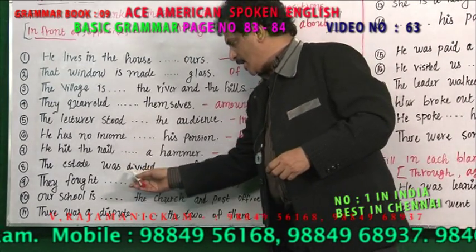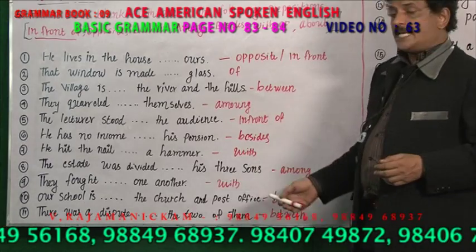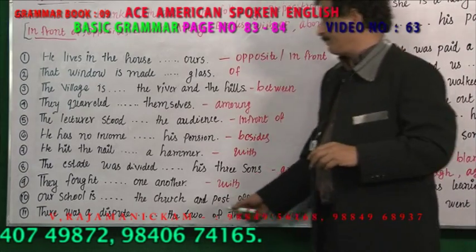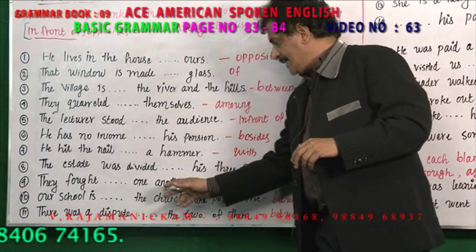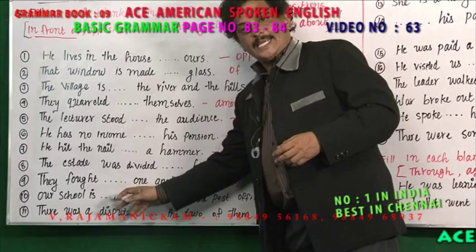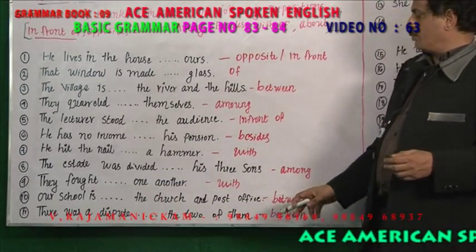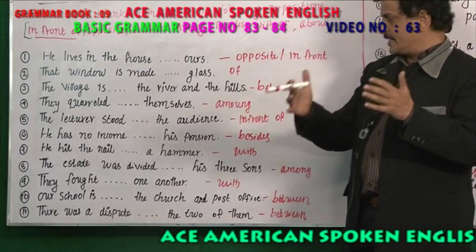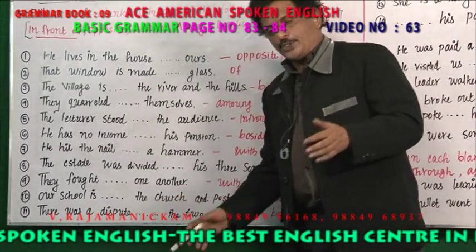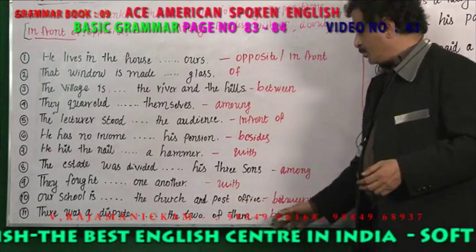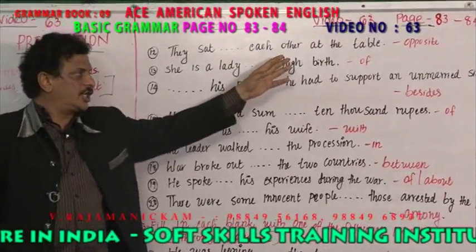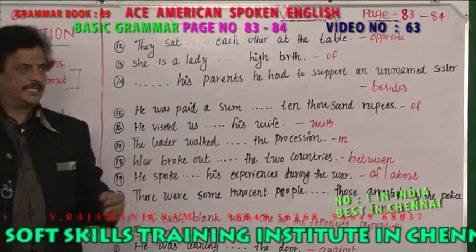'The estate was divided dash his three sons' — among three sons. 'They fought dash one another' — with one another. 'Our school is dash the church and post office' — our school is between the church and post office. 'There was a dispute dash the two of them' — between the two of them. 'They sat dash each other at the table' — opposite each other.